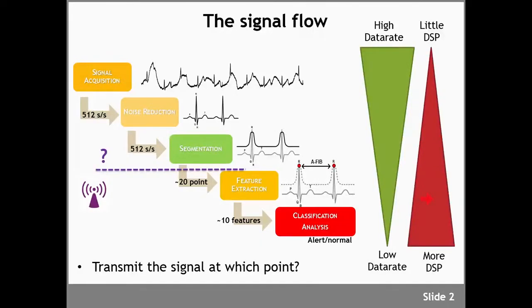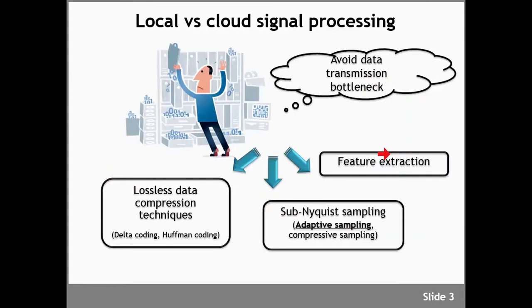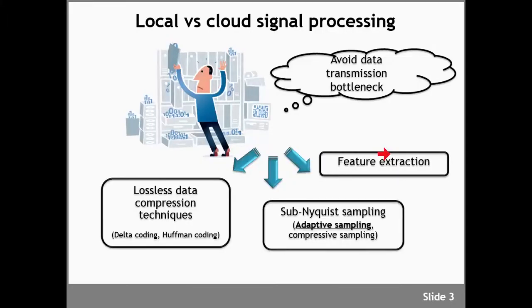So the question now is: at which point do we transmit? As we go further down the signal flow we have to transmit less data so we can save on radio power, but we need to do more computing on the node which increases power again. There's a difficult trade-off in figuring out how much local versus cloud signal processing to do. There are many techniques people can use to reduce the data rate transmitted to the cloud, such as lossless data compression, local feature extraction, or sub-Nyquist sampling.